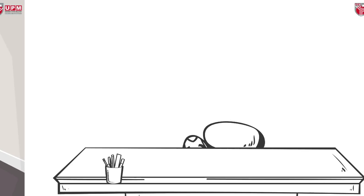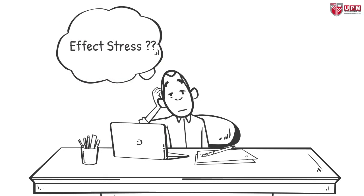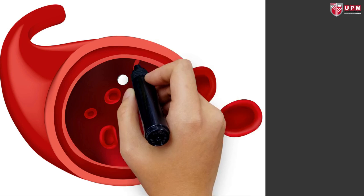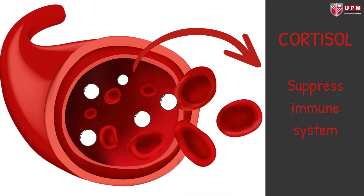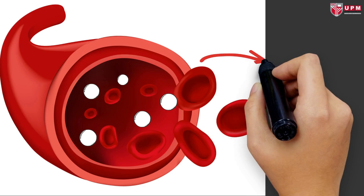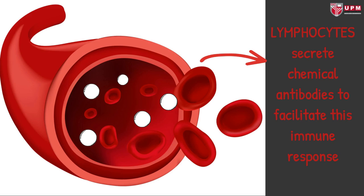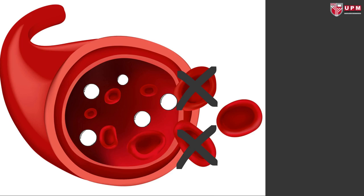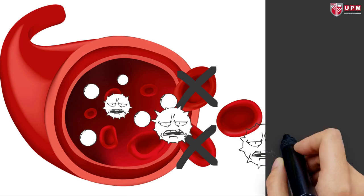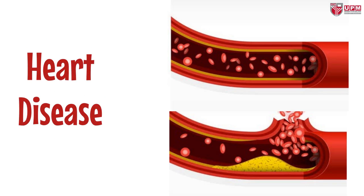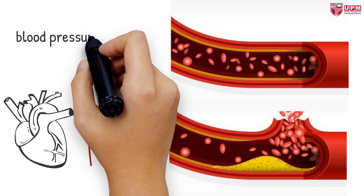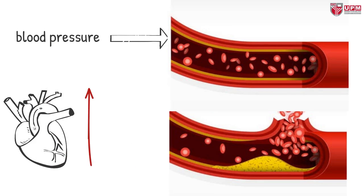What is the effect of stress on an individual's physiology? First, stress can decrease our immune system. Stress triggers the release of cortisol, which suppresses the immune system. Lymphocytes secrete chemical antibodies to facilitate the immune response, but over a long time they become insensitive and our body becomes more susceptible to infection. Stress can also contribute to heart disease, because stress and anxiety increase the heart rate and blood pressure, which can lead to plaques rupturing and causing blood clots to form.